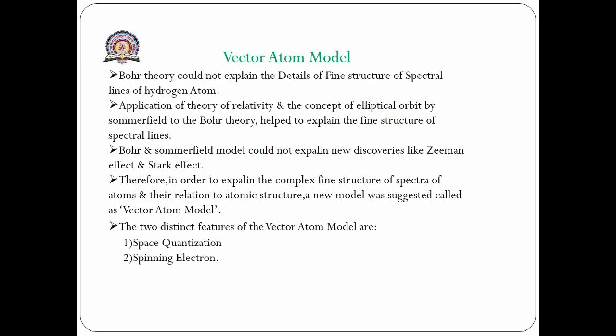Vector Atom Model. In the last lecture we had already explained the Bohr-Sommerfield theory, in which three quantum numbers N, K, and R were introduced, where N represents the principal quantum number, K is the azimuthal quantum number, and R is the radial quantum number. The Vector Atom Model was invented to overcome all the drawbacks of this Bohr-Sommerfield theory.